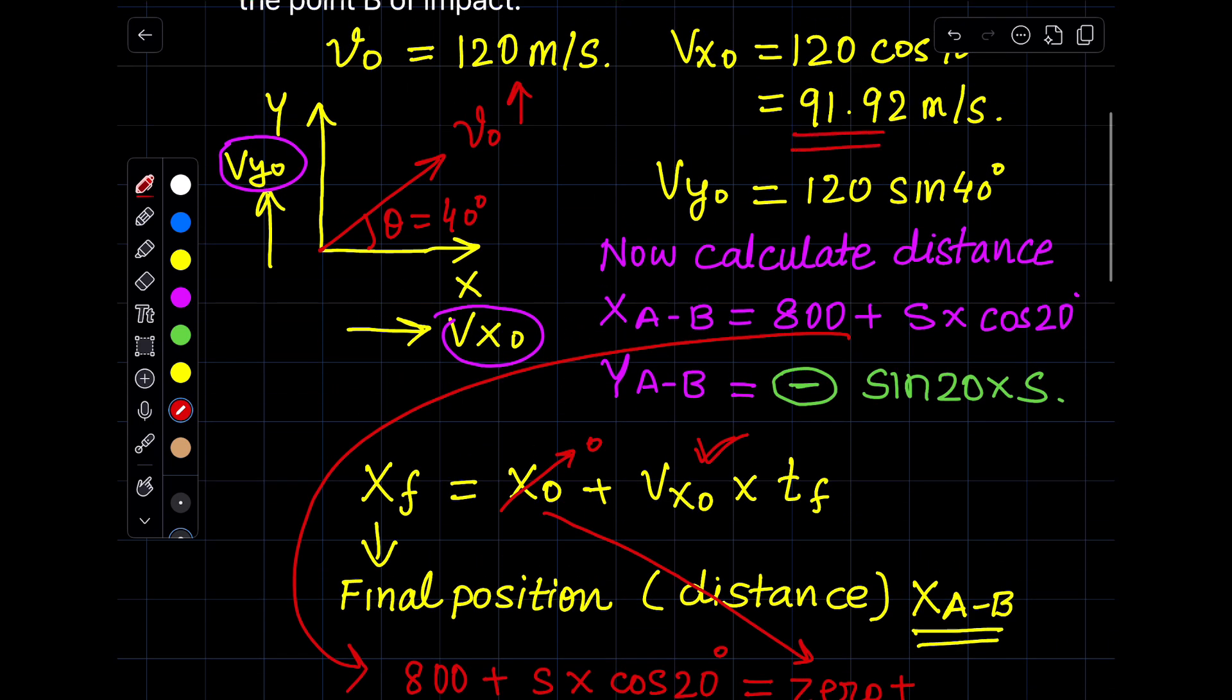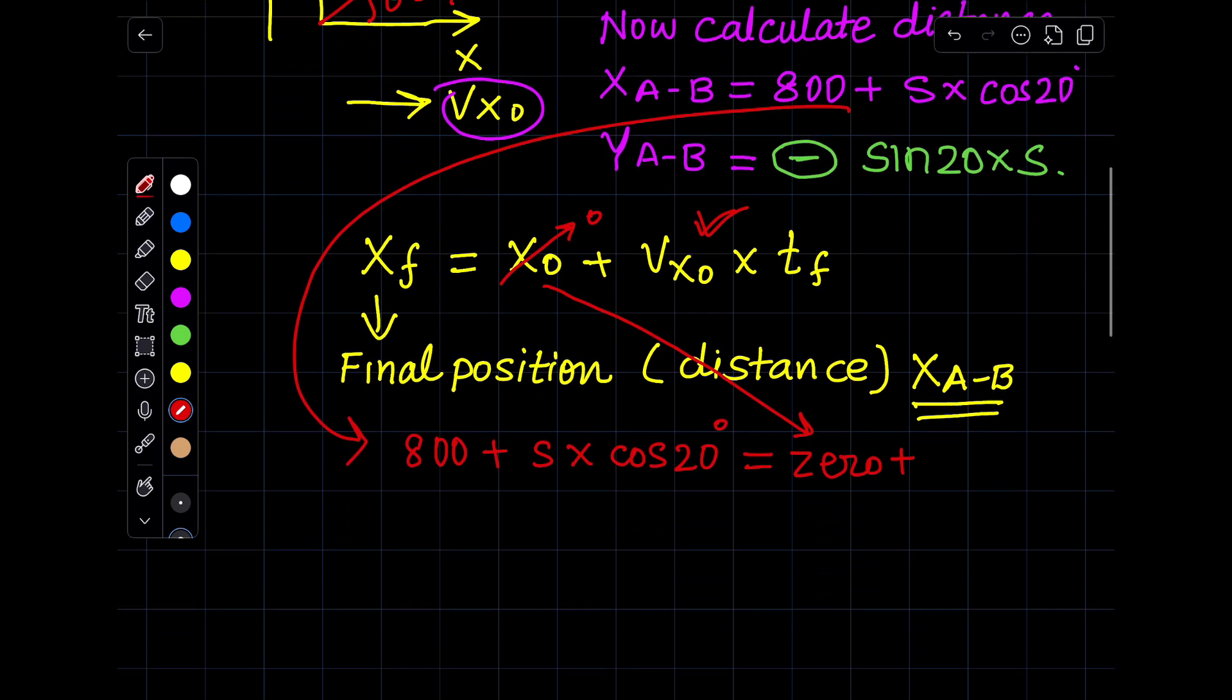We have just calculated above, so this is 91.92 meters per second, multiplied by time of flight. This is our first equation.